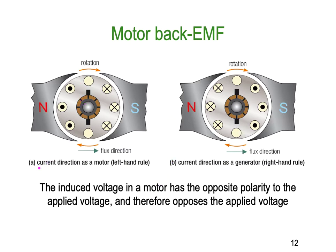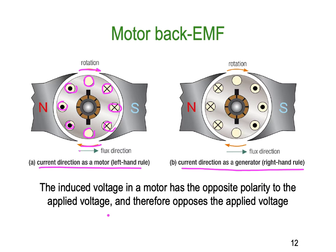Looking at the current direction in a motor using the left-hand rule, we get rotation as indicated by the arrows. Current is coming towards certain points, no current flows in conductors outside the magnetic field, and then current flows in the opposite direction. This is the exact opposite to a generator, which uses the right-hand rule. The induced voltage in a motor has the opposite polarity to the applied voltage — that's the back EMF.